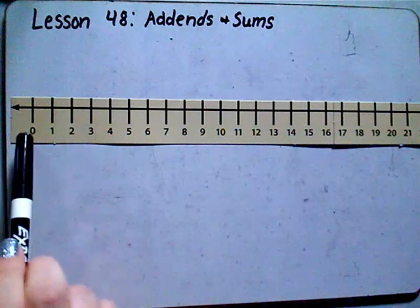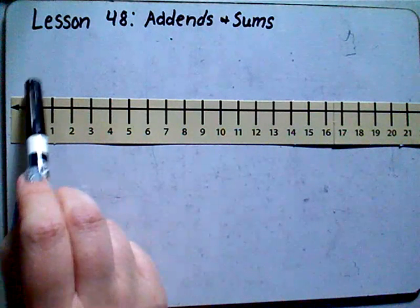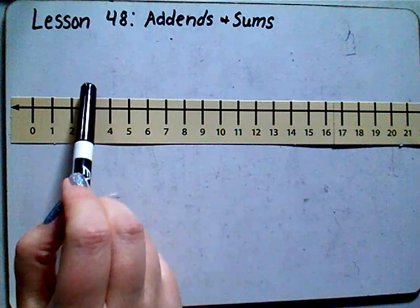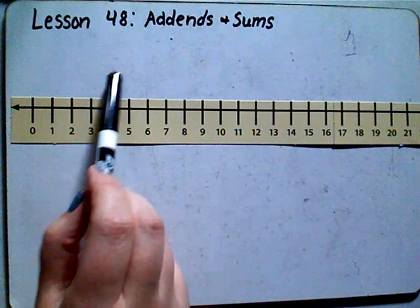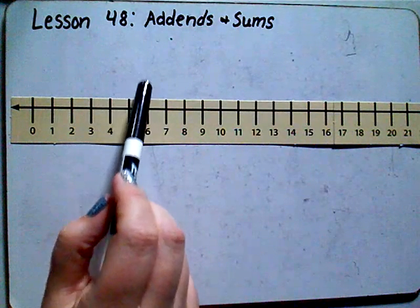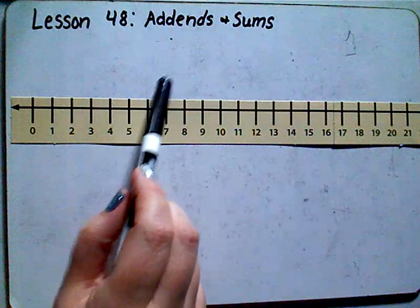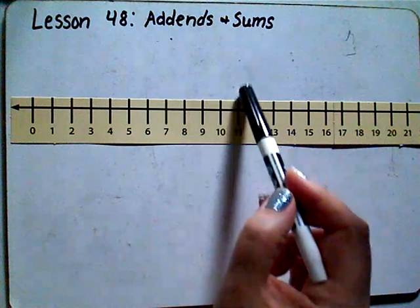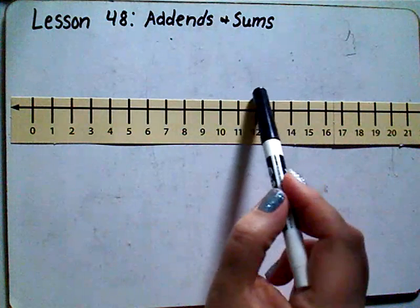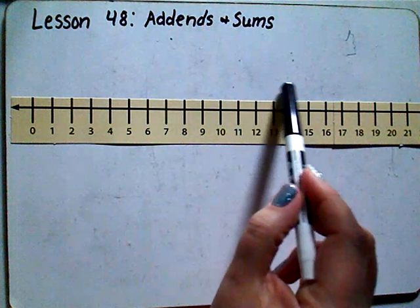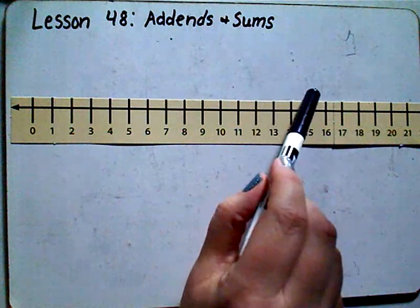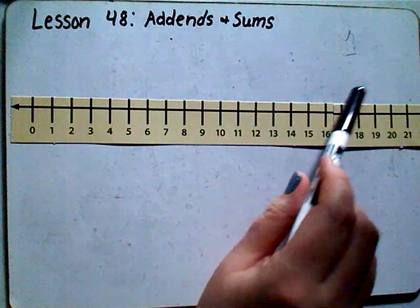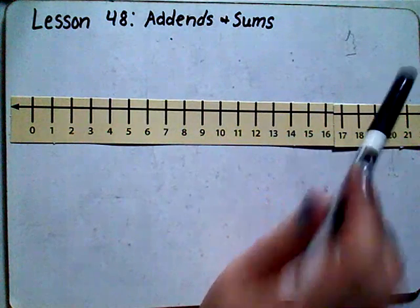Let's go ahead and count by ones. We're going to start at zero and show our hops: one, two, three, four, five, six, seven, eight, nine, ten, eleven, twelve, thirteen, fourteen, fifteen, sixteen, seventeen, eighteen, nineteen, twenty. Good.